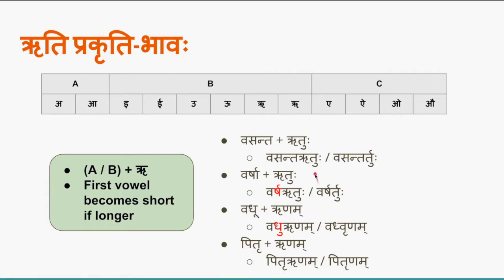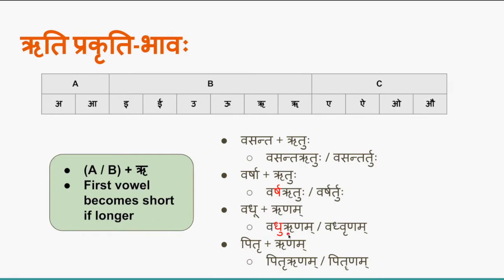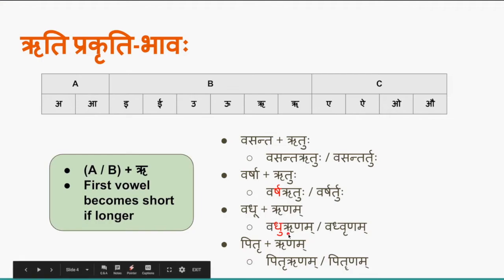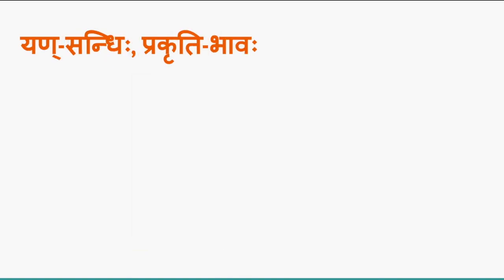So whatever sandhi applies between a or b category with rikara — whether savarna dirga sandhi, guna sandhi, or yanaadesha sandhi — in all three cases prakriti bhava can optionally occur. In prakriti bhava, if the first vowel is long it becomes short, and both letters remain side by side without sandhi. We get two forms. This brings us to the next type: en sandhi prakriti bhava, where en sandhi can optionally be replaced by prakriti bhava.